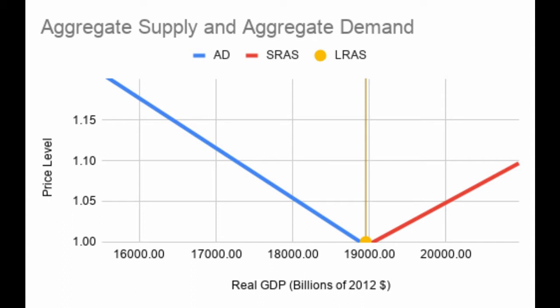Through this model, we can examine the relationship between an economy's price level and real gross domestic product, or output from the economy. This relationship works through the mechanisms of aggregate demand and aggregate supply.